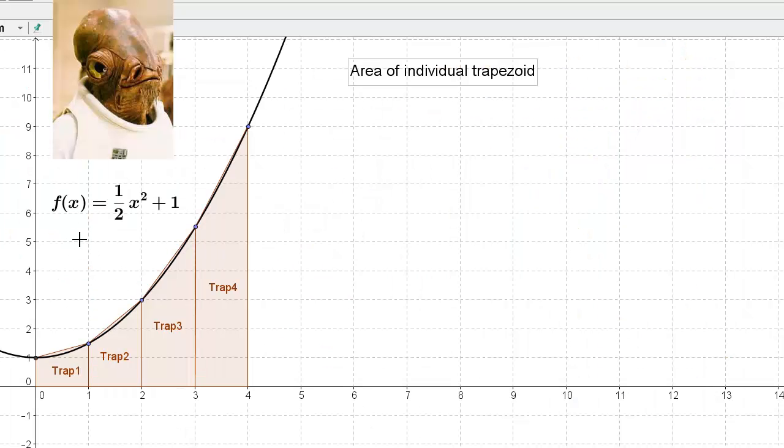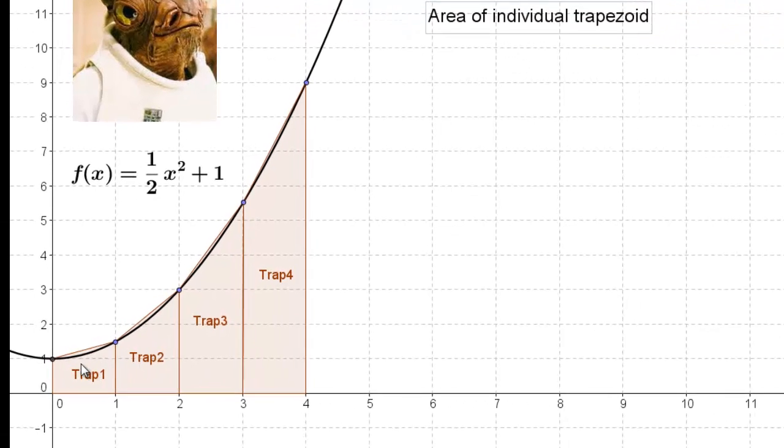Here's that same function, f(x) = 1/2 x² + 1, and we've divided this into four trapezoids instead of four rectangles. Just looking at this, you can see that these sloped lines that are the top of the four trapezoids do a much better job than a horizontal line would. The gaps are much smaller. Even with just four trapezoids, we have a much smaller error in the area than we would under the rectangle method.